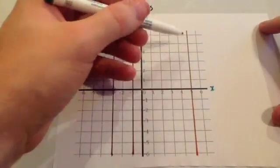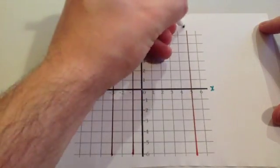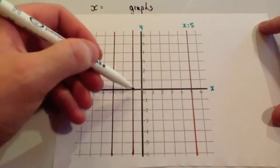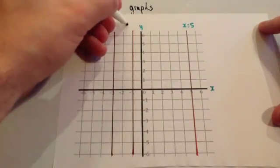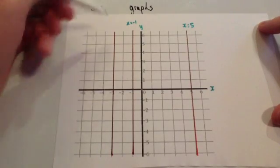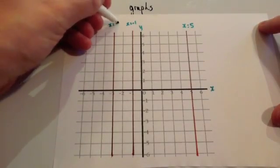And so here we've got this one. This would be, because it goes through 5, this would be the graph x equals 5. This one is vertical and goes through minus 1 on the x axis, so this one's going to be x equals minus 1. And this one's vertical and goes through minus 3, so this one's x equals minus 3.